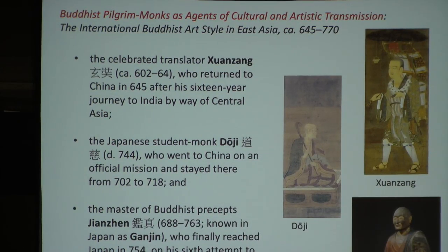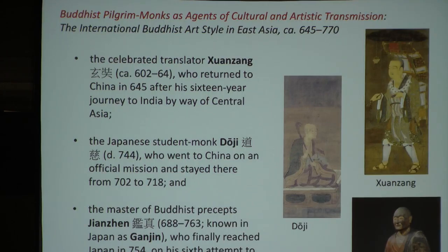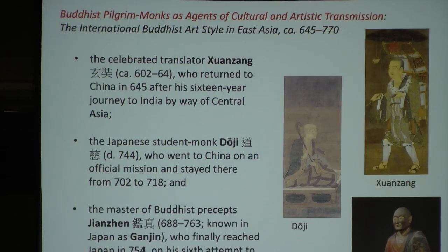The second monk was the Japanese scholar monk Doji, who traveled to China and stayed there from 702 to 718—also almost 16 years. The third is Jianzhen, better known in Japanese as Ganjin, the Chinese monk who tried to cross the East China Sea to go to Japan by boat. He tried five times and failed five times, and finally succeeded on his sixth attempt. All three of them carried Buddhist icons and other artifacts on their journeys. In addition to guiding imperial patrons on doctrinal matters, they steered them in temple building activities and in the production of Buddhist art.